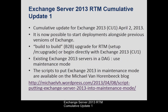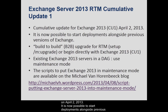Exchange Server 2013 RTM Cumulative Update 1. Six months after RTM, Microsoft shipped the first cumulative update for Exchange 2013 CU1 on April 2, 2013. It is now possible to start deployments alongside previous versions of Exchange.